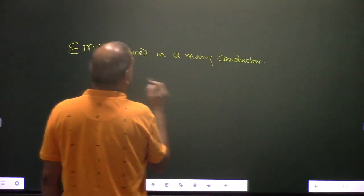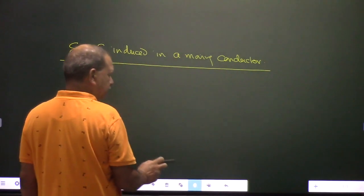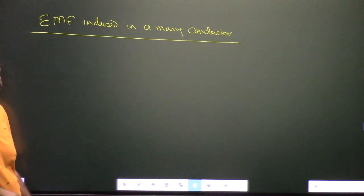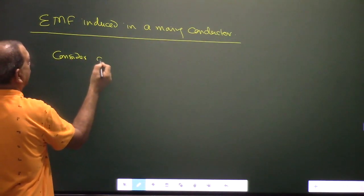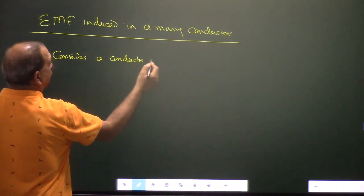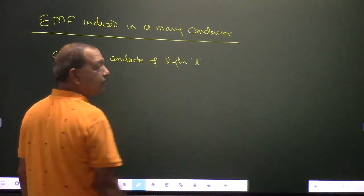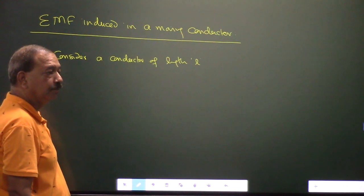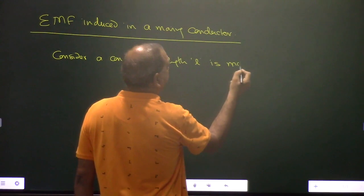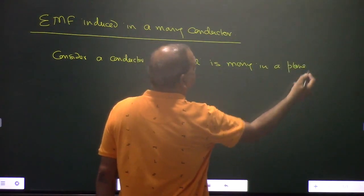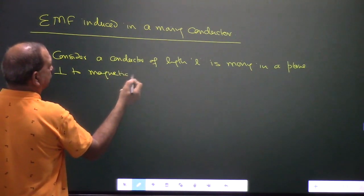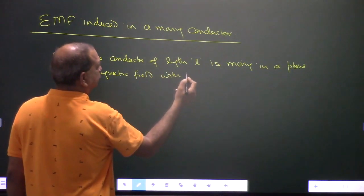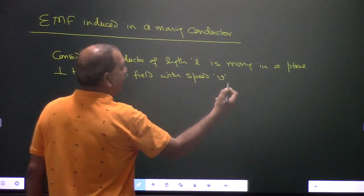EMF induced in a moving conductor. Consider a conductor of length L moving in a plane perpendicular to magnetic field with speed V as shown.